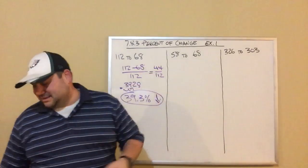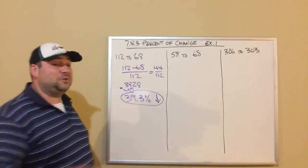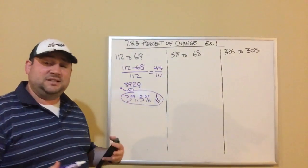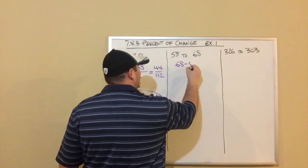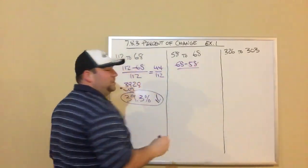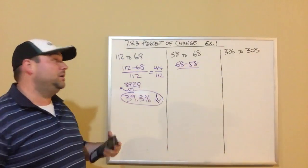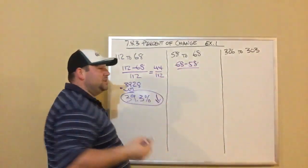All right, let's look at our next example, 58 to 68. So we're going to do the same thing. We need to find the amount of change, the difference of the two numbers. So all we do is we subtract the two numbers. Again, just bigger number minus smaller number. It doesn't matter the order for that part.